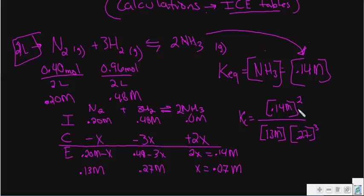So now you see, you can easily take this square 0.14 and divide it by 0.13 times 0.27 cubed. The answer you get if you calculate that out on your calculator is going to be 7.66. So the Kc in this case equals 7.66.